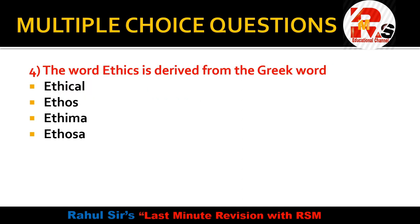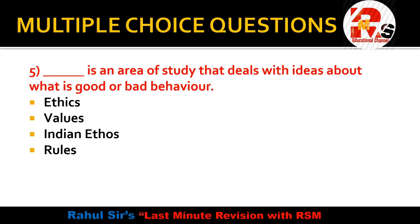Question number 4: The word 'ethics' is derived from the Greek word — options include Ethical, Ethos, Ethema. The correct answer is Ethos. The word 'ethics' is derived from the Greek word Ethos.